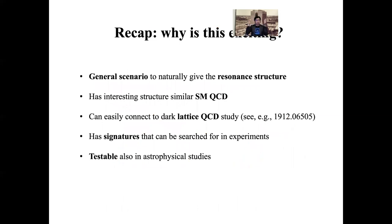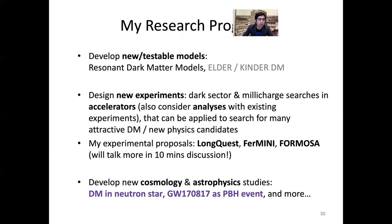So recap, why is this very interesting? It's a general scenario to naturally give the resonance structure in dark matter or standard model sector, has interesting structures similar to standard model QCD, can easily connect to dark lattice QCD theory. For example, this paper actually calculates the meson states and we can use that. It has signatures that can be searched in accelerator experiments, and it's also testable in astrophysical study. My research program is not limited to this. It also has developing other models, searching for new physics in these new experiments. There are many experiments that I propose, and also develop new cosmological and astrophysical searches looking for dark matter in neutron stars, gravitational events.